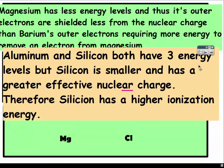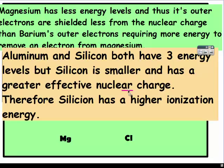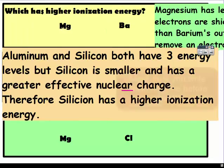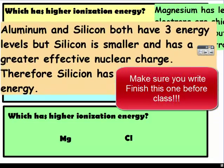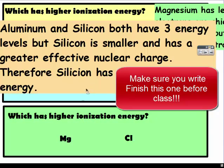Figure out the last one: who has the higher ionization energy, magnesium or chlorine? Write your response and have that ready for class.